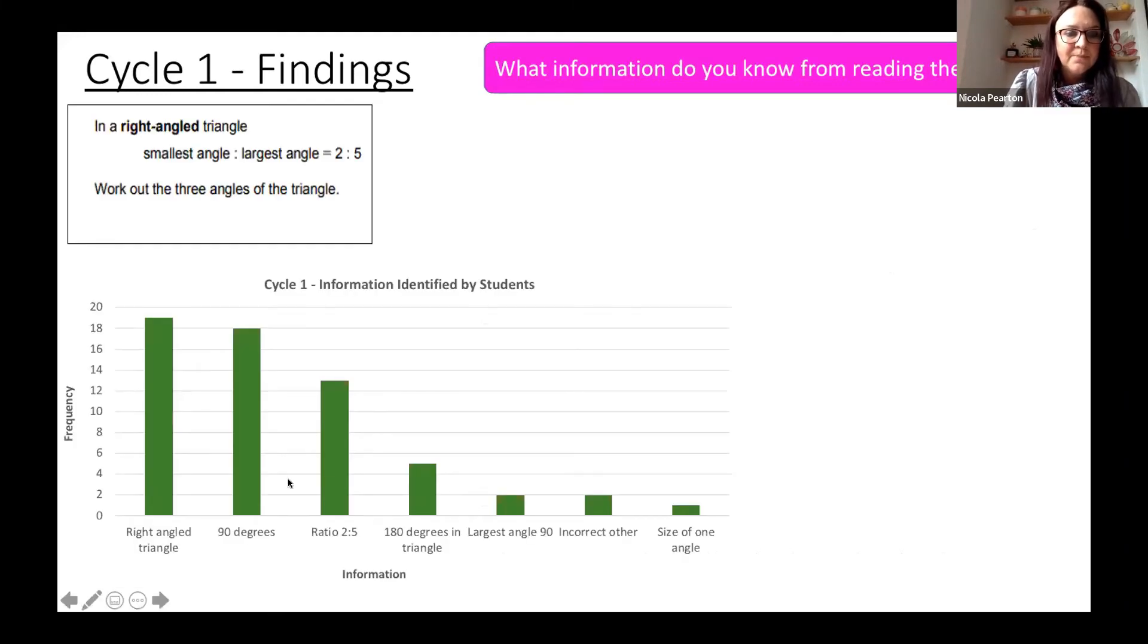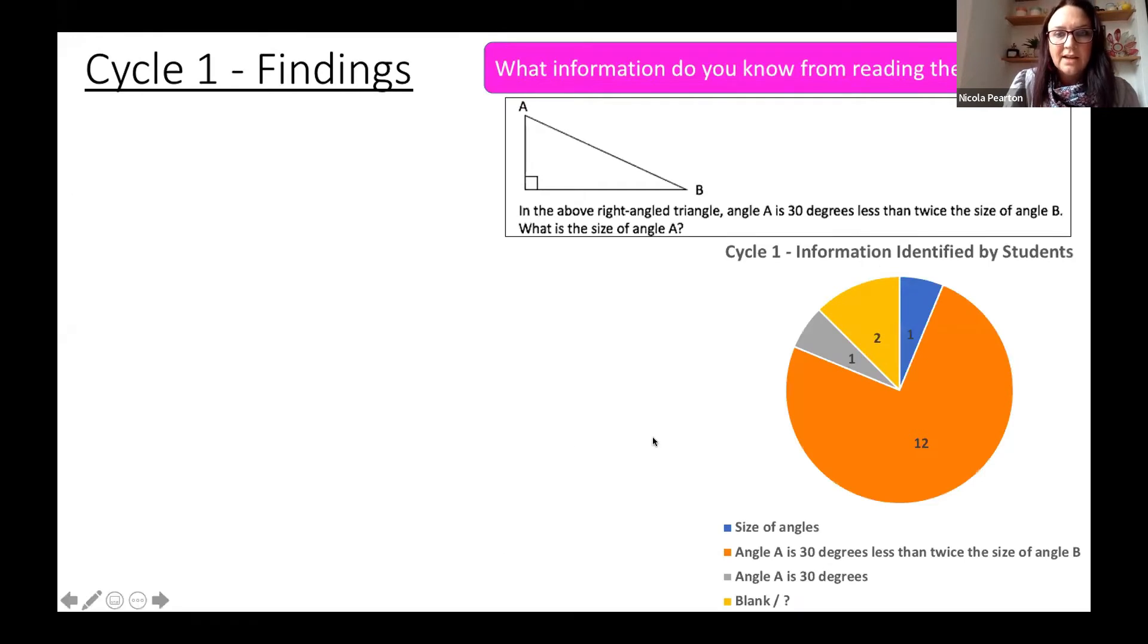We then asked them what information they know from reading the question. I think we may not have worded this very well because they took it quite literally, reading the actual worded question. Most students for this question said right-angled and mentioned 90 degrees, which was the key point, so that was positive. The Brighton students literally just said the size of the angles. What was quite concerning was that although this question actually had the diagram, they didn't mention triangles or more specifically right-angle triangles, where the 90 degrees was obviously key to answering this question.